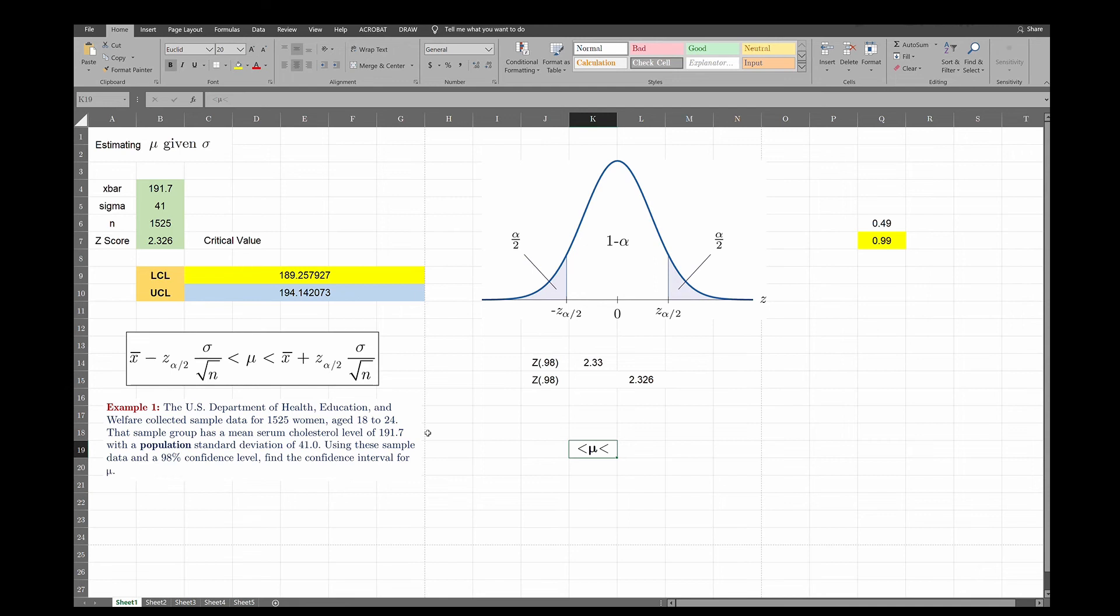So mu, it's greater than, definitely it's going to be greater than 189. Let's say I'm asking you to round it to two decimal places so it'll be 189.26 and the upper class limit, the right hand side will be 194.14. So you basically say I may never know what the actual cholesterol level of all women ages 18 to 24 is in the United States but I'm 98% confident that it's somewhere between 189 and 194.